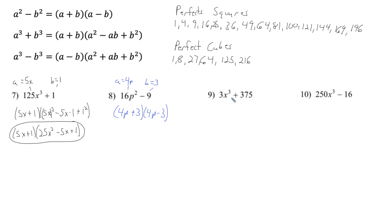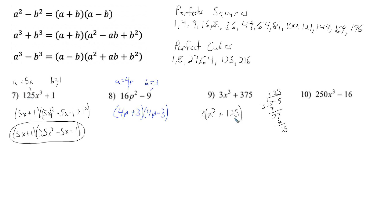Number 9: 3x cubed plus 375. There is a common factor of 3. Factoring out 3: 375 divided by 3 is 125, giving us 3(x cubed + 125). This binomial fits the sum of cubes. What cubed gives x cubed? That's x, so a equals x. What cubed gives 125? That's 5, so b equals 5.